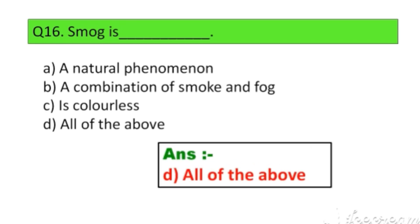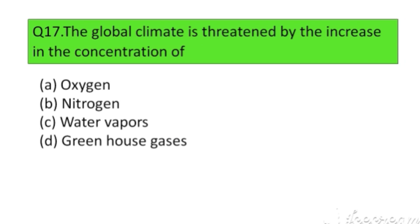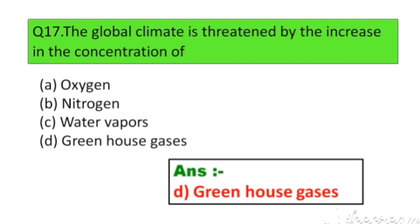Question number 17. The global climate is threatened by the increase in the concentration of: Option A. Oxygen, B. Nitrogen, C. Water vapors, D. Greenhouse gases. The right answer is Option D: Greenhouse gases.